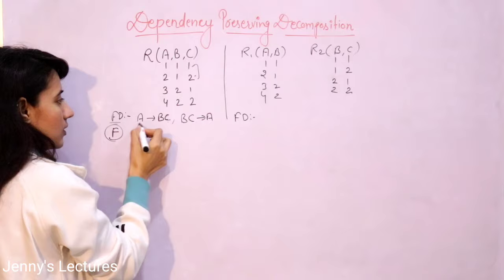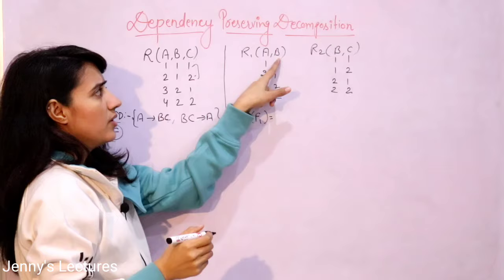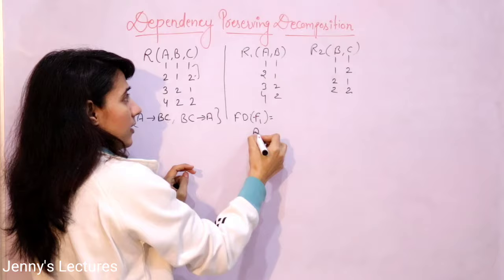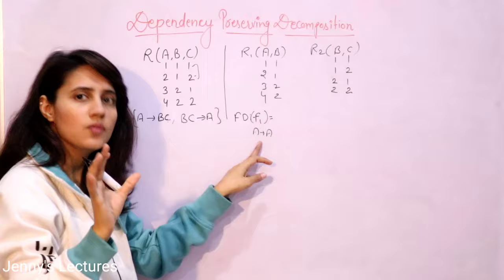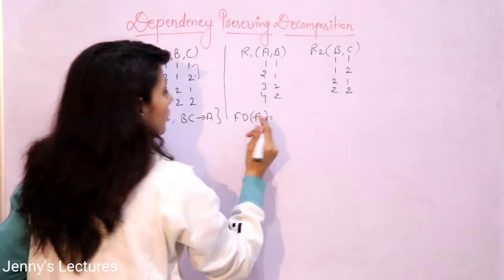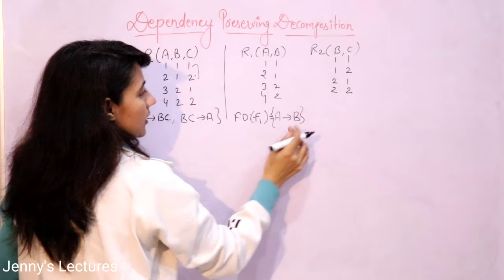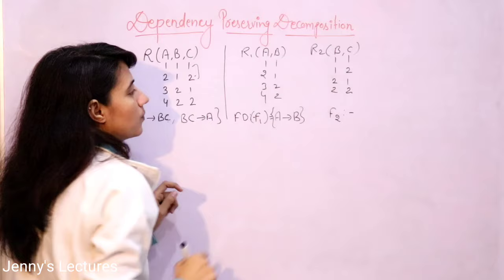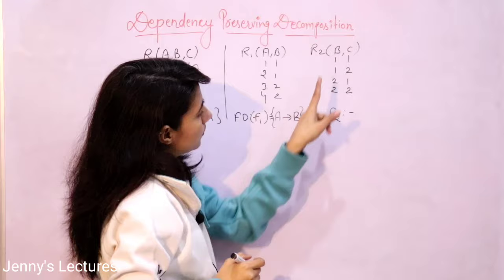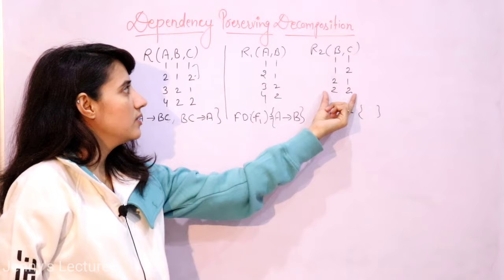For R1 (A, B): A can derive B, B can derive A — these two functional dependencies are possible. Trivial FDs like A → A and B → B are present by default, so we don't write them. A can derive B — yes, that is possible. Can B derive A? No. So only one functional dependency is possible here: A → B. For R2 (B, C): Can B derive C? No. Can C derive B? No. So F2 is null — there is no functional dependency in R2.